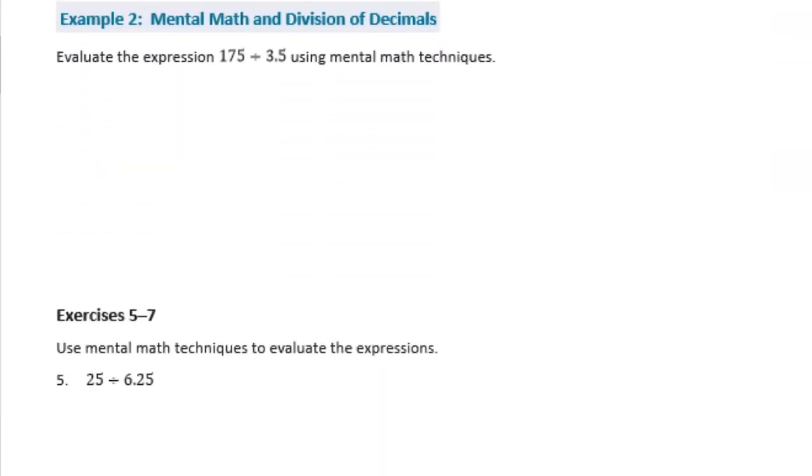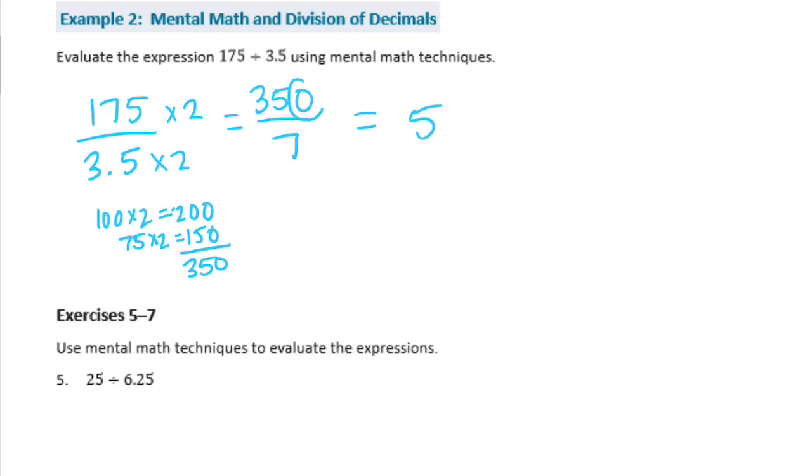Example 2. Evaluate the expression 175 divided by 3 and 5 tenths using mental math techniques. So now they're throwing some more decimals at us. My goal here, I want to get 3 and 5 tenths into a whole number. And I can do that by multiplying by 2. Because if I multiply by 2, that makes that 7. 175 times 2 is 350. And we can do 350 divided by 7. So 35 divided by 7 is 5. With this extra 0 gives us 50. So our quotient would be 50.